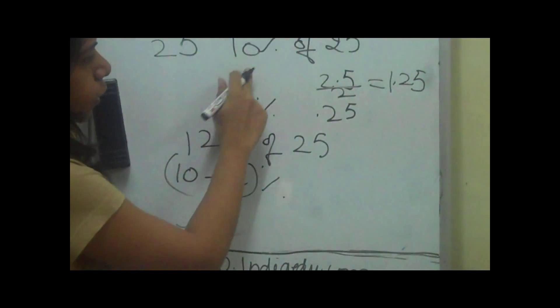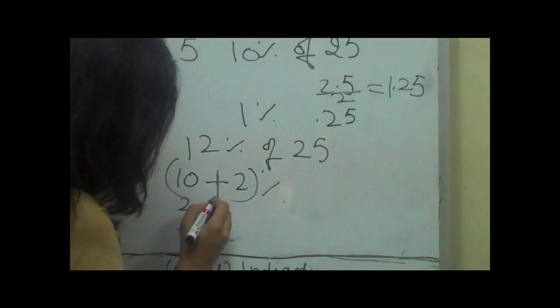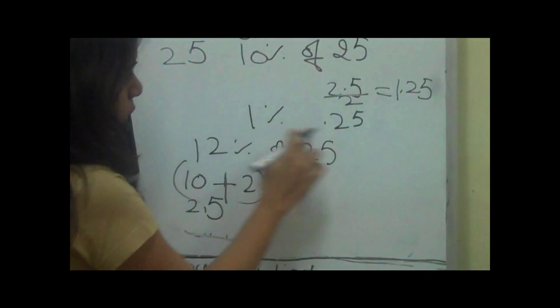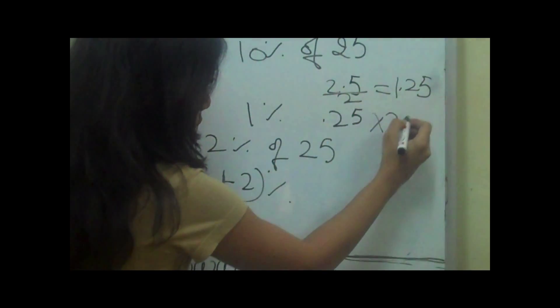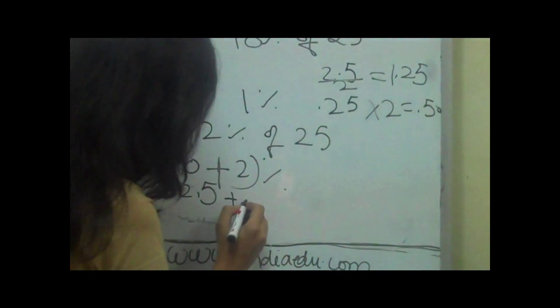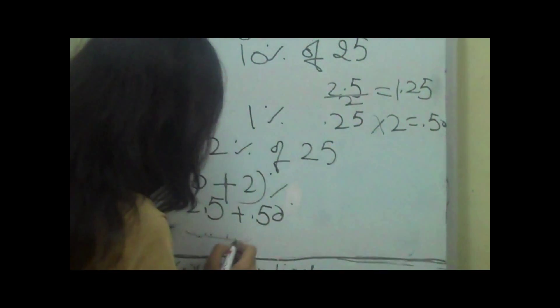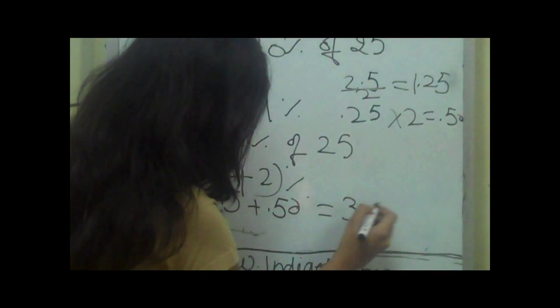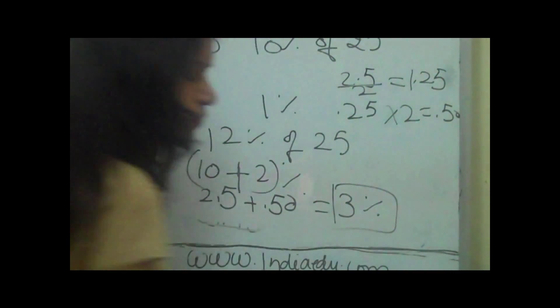10 percent of 25 is 2.5 and 2 percent would be 0.25 times 2, which makes 2.3, and that's the answer.